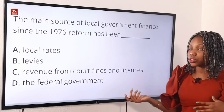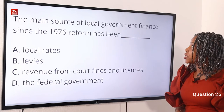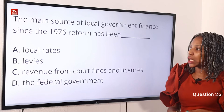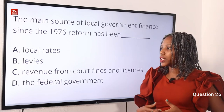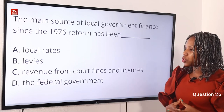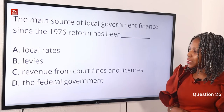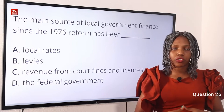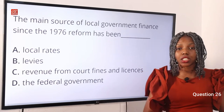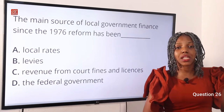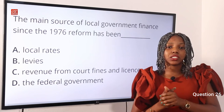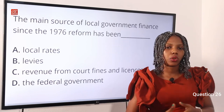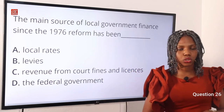Moving over to question 26. The main source of local government finance since the 1976 reform has been dash. Option A, local rate. Option B, levies. Option C, revenue from court fines and licenses. Option D, the federal government. The answer is the federal government. The federal government has been the major source of finance to local government from 1976. Option D is the correct answer.